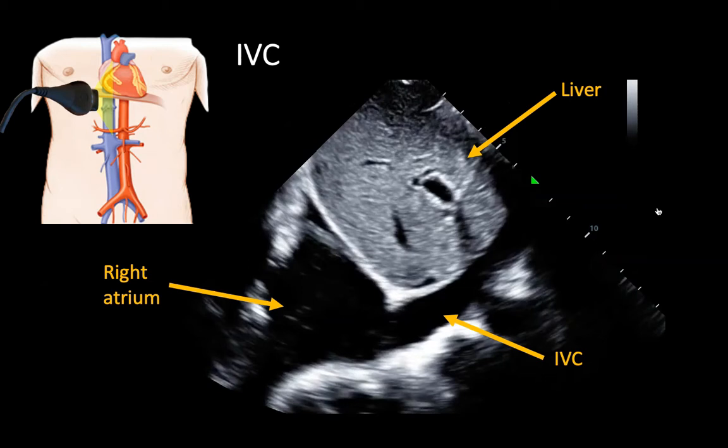That covers our cardiac views for the RUSH exam. Let's move on to the IVC. In this lecture, we'll use the IVC only as a sign of cardiac tamponade in the presence of a pericardial effusion. Some practitioners also use IVC ultrasound to assess for volume status, however this practice gets complex quickly. IVC scans are quite reliable in assessing for tamponade in a patient with a pericardial effusion.